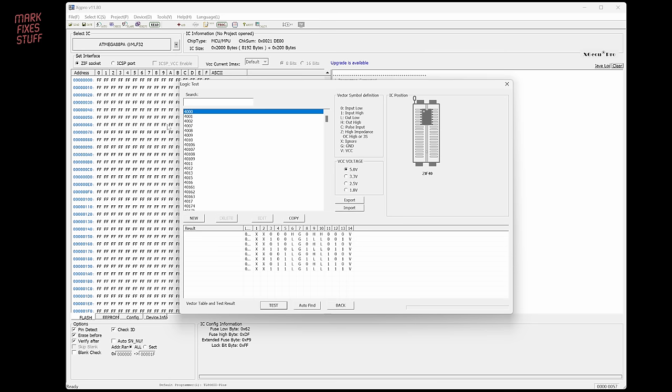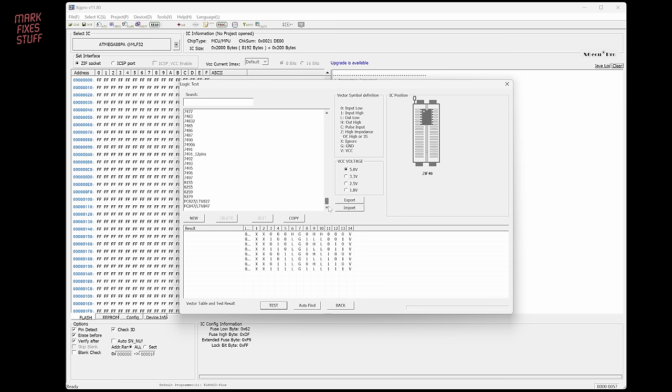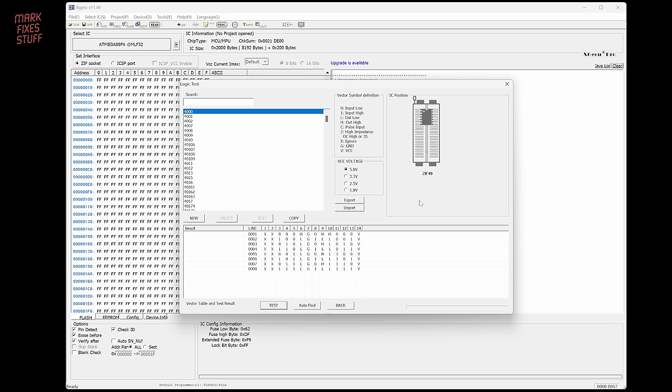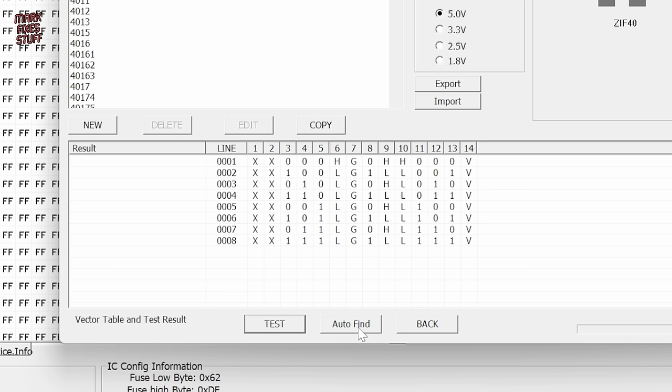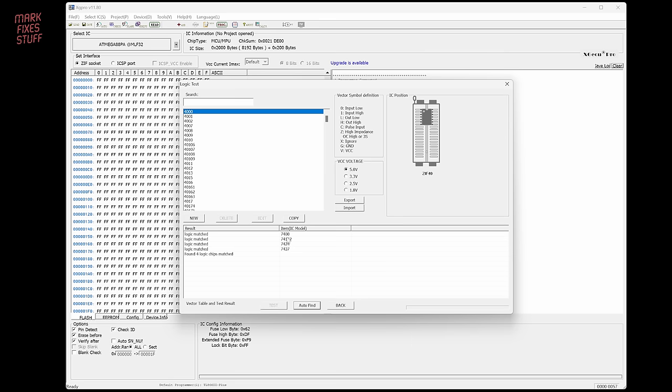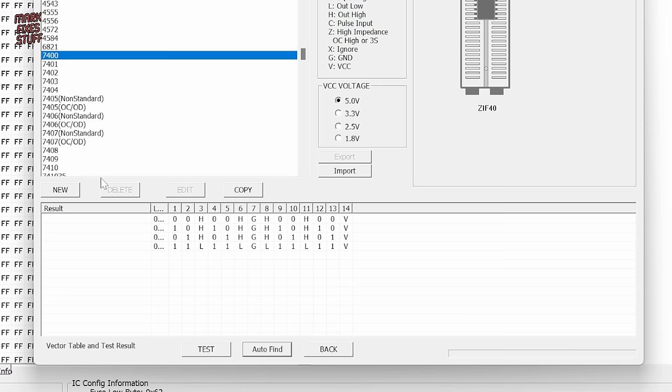To test my logic, I just go to device, logic IC select and there is a huge list of devices here. I mean, it really is massive. Down in the bottom of the software, we've got the vector table showing possible inputs and outputs. Up the top, we've got the definitions shown in the vector table. You can press this auto find button which will fire off some states to the chip and come back with a list of possible candidates. It does find what we want, the 7400, but it's useless because you can't click into that and have to pick it out of the list anyway.